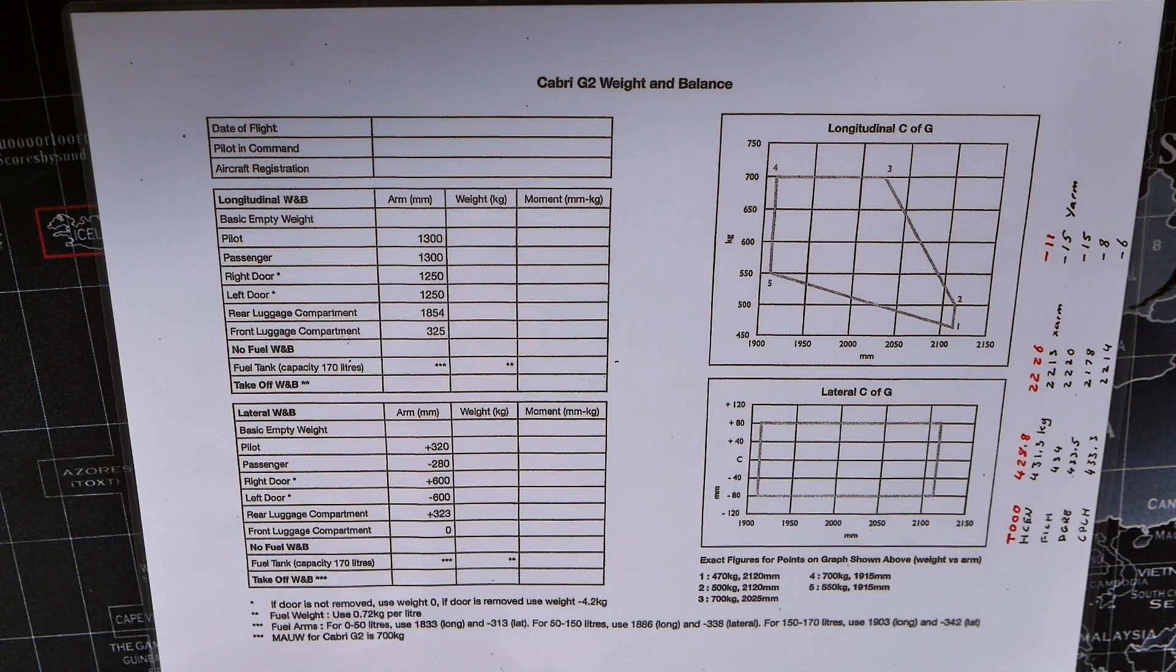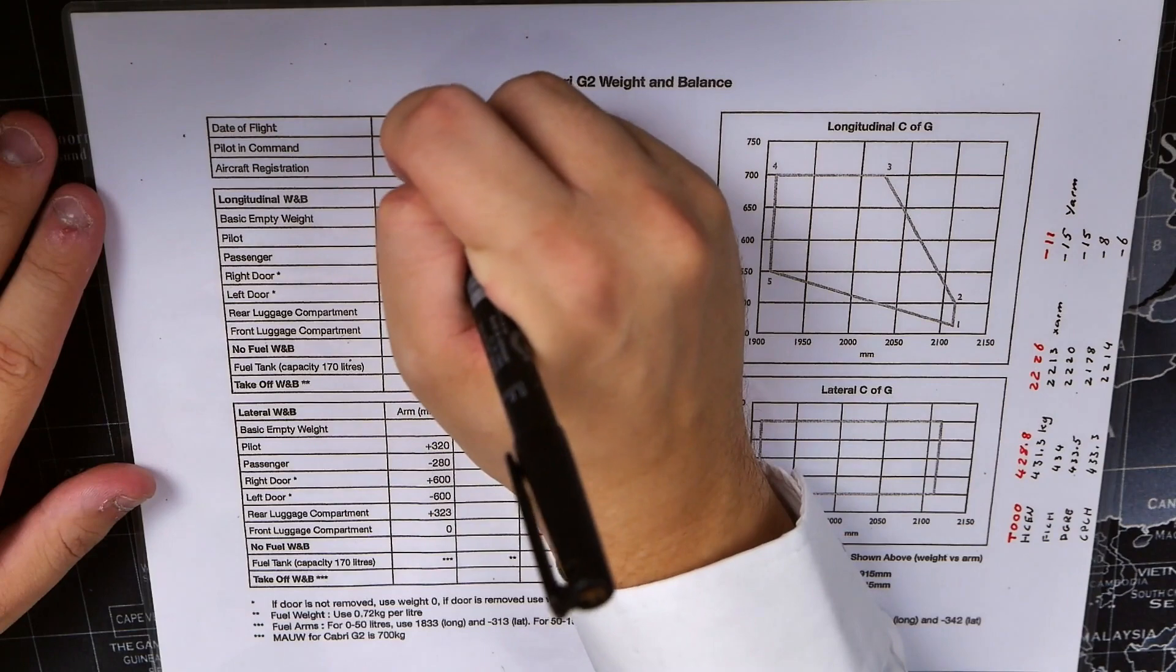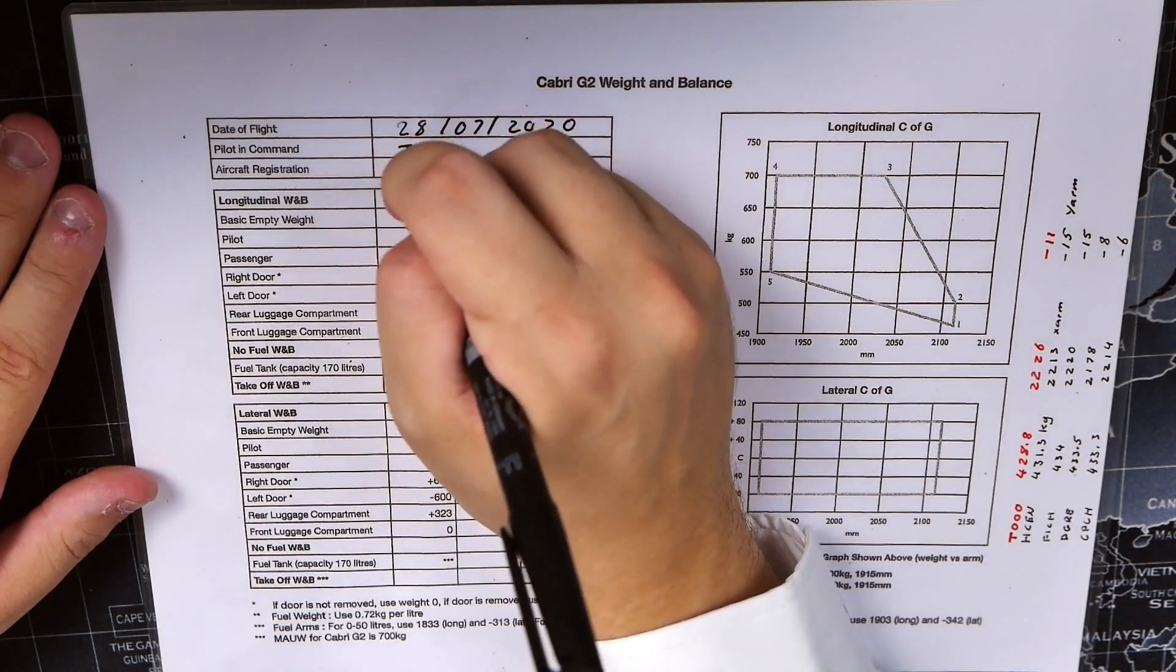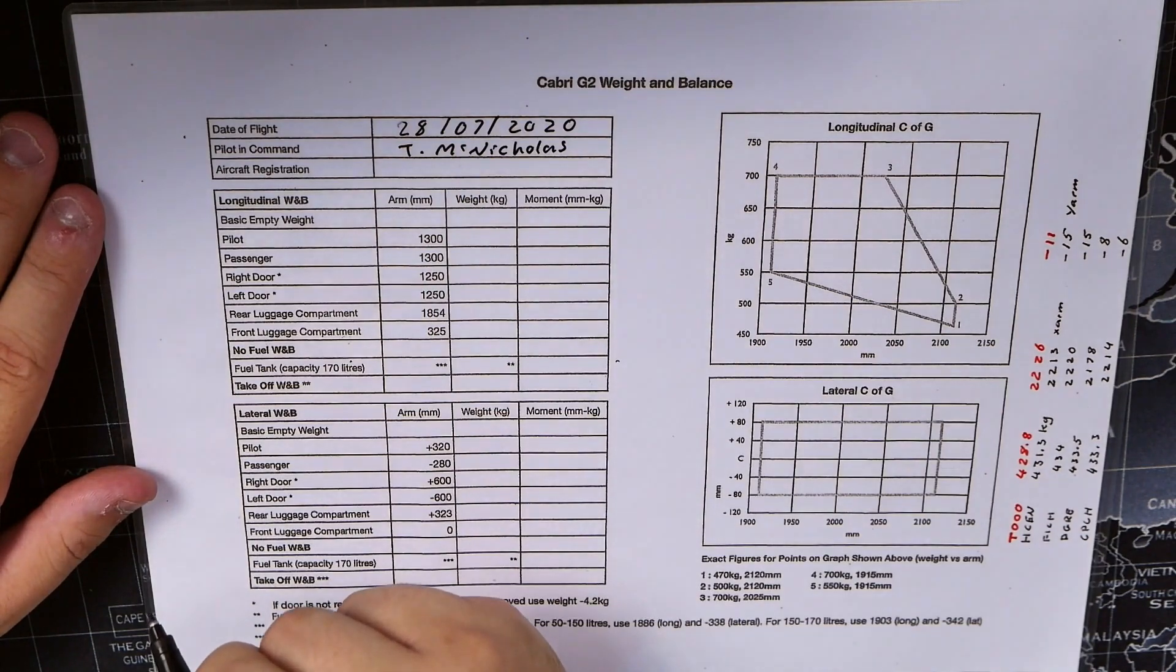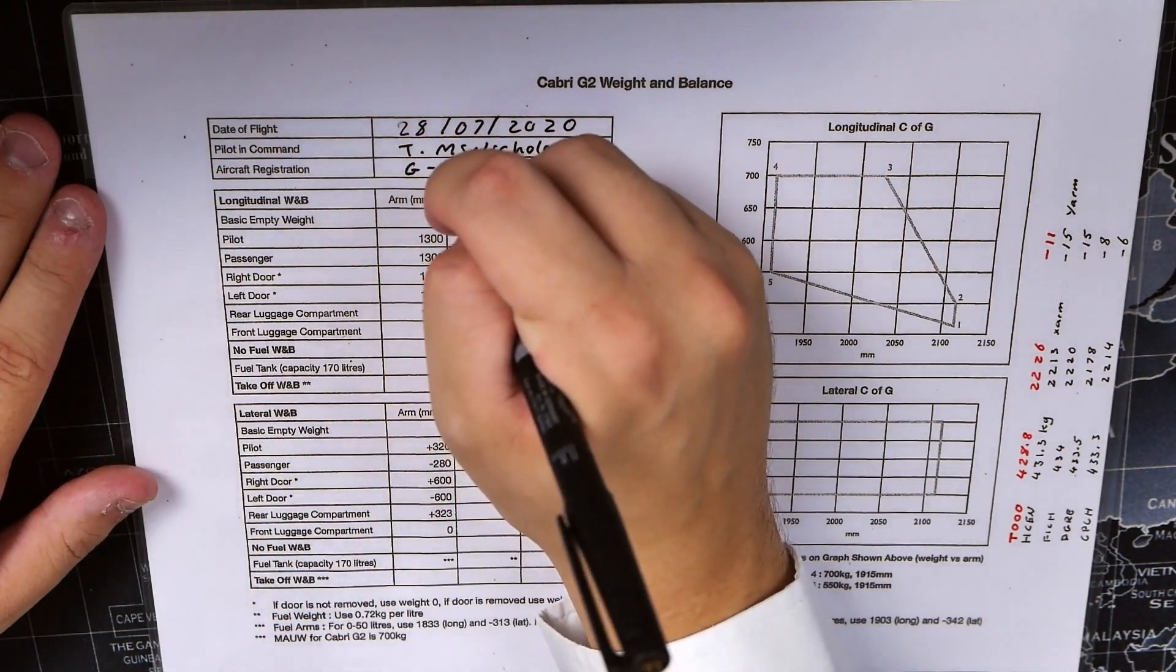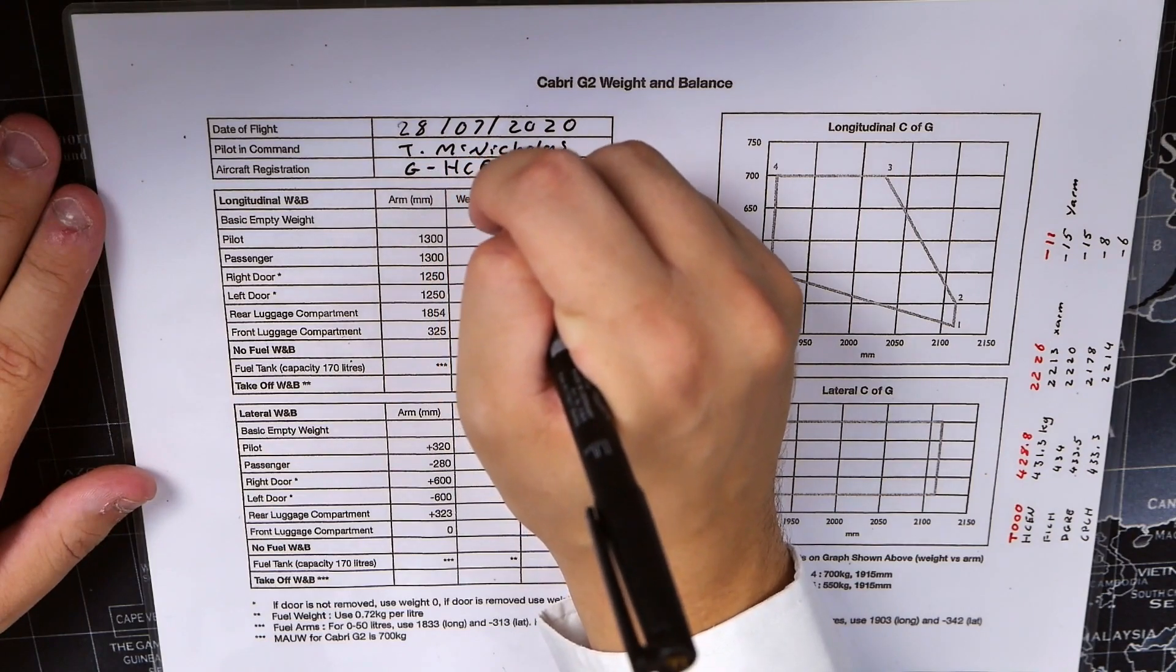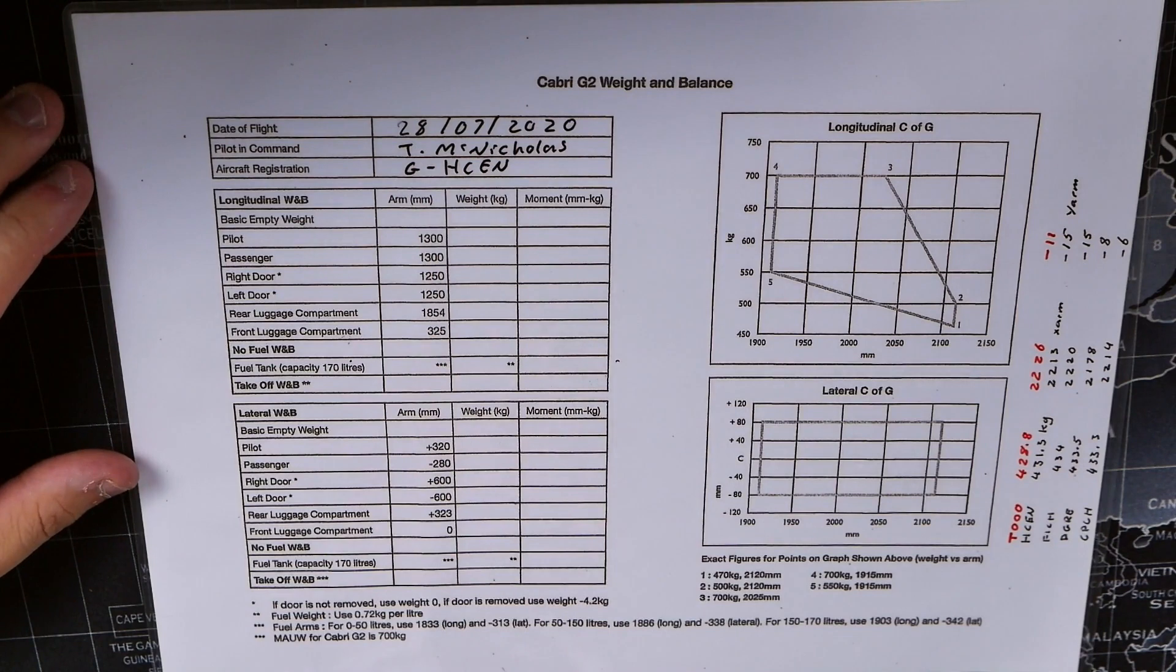On today's pretend flight, I'm going to put a date of the day this video goes out. Pilot in command today is myself and the aircraft registration is Golf Hotel Charlie Echo November, which is one of the Cabri G2 helicopters we've got at Helicentre.